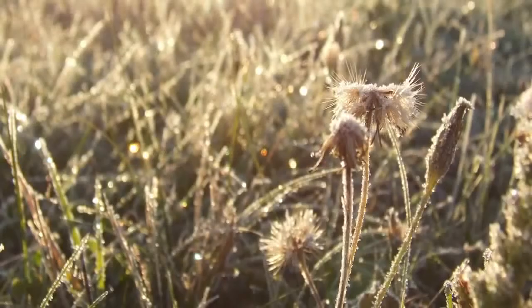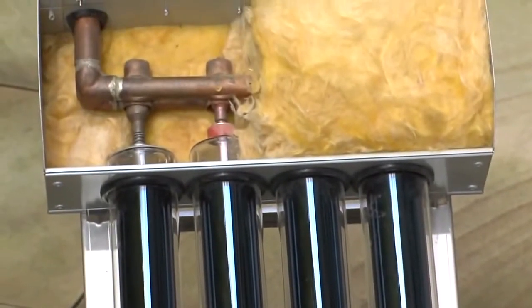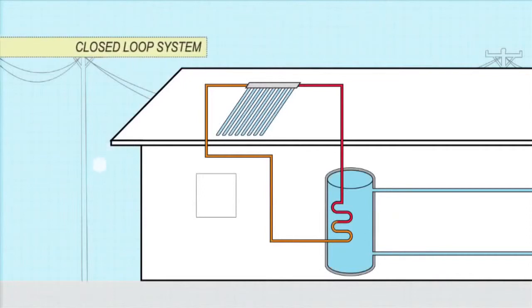In places with minor frosts, evacuated tubes may offer enough inbuilt protection. In climates with regular frosts, indirect or closed-loop systems are the most popular and reliable form of frost protection.